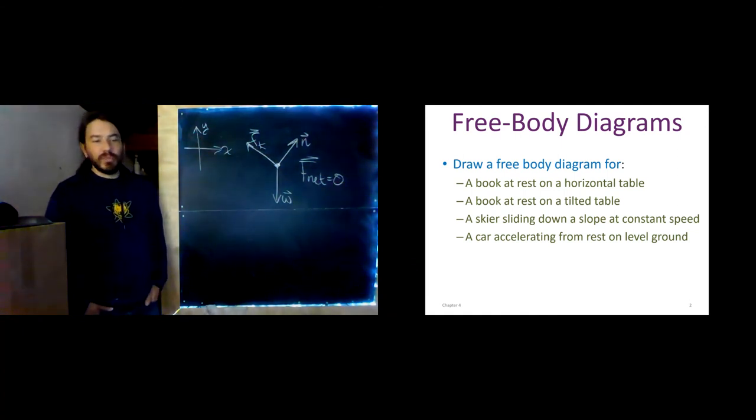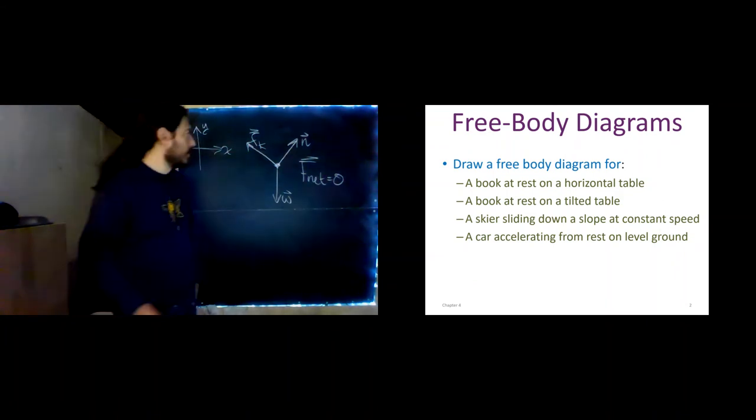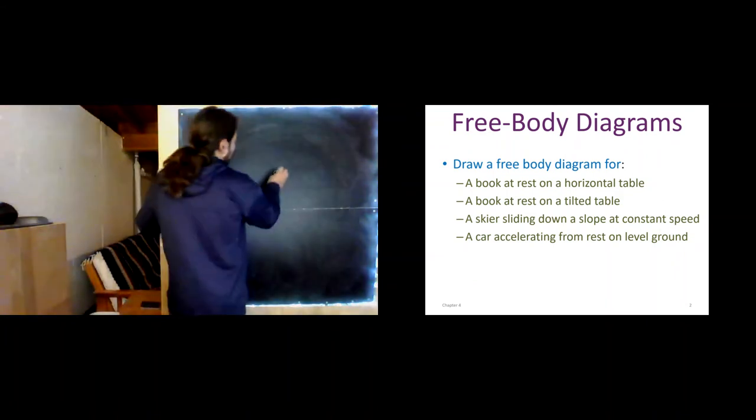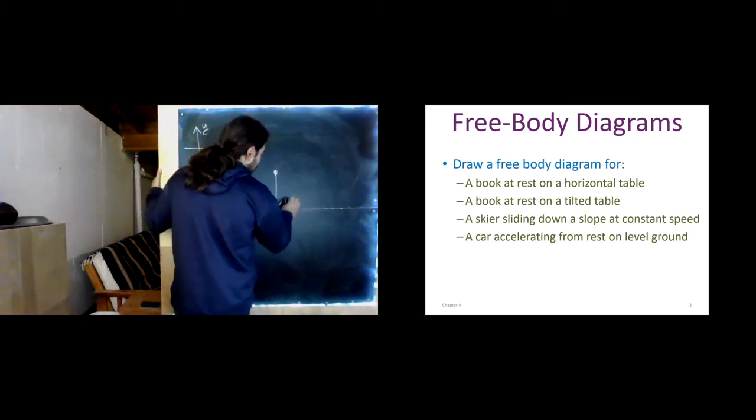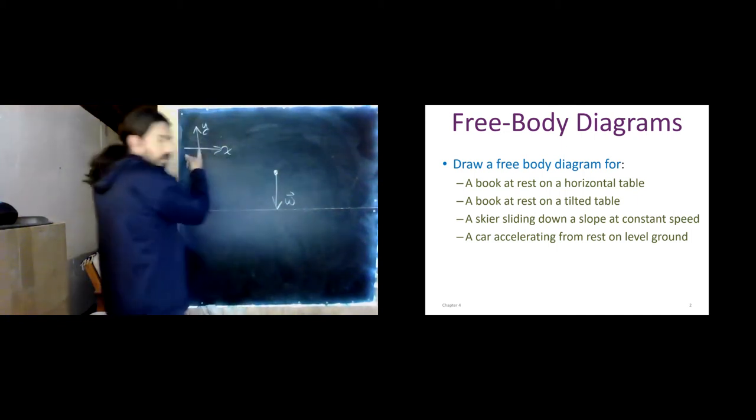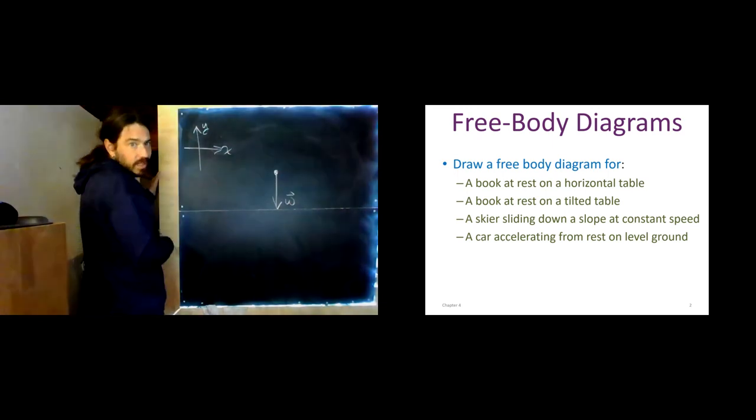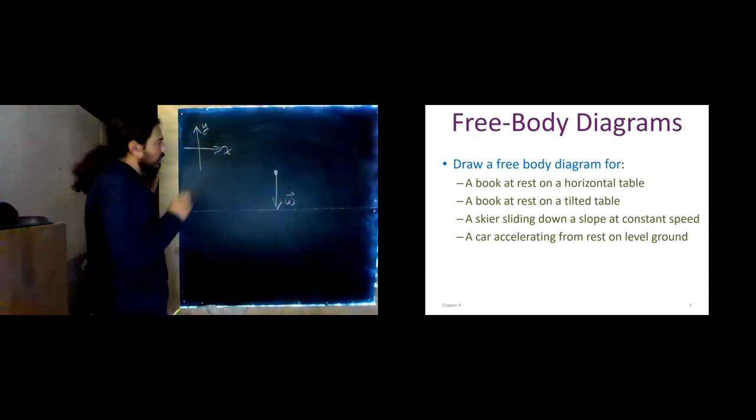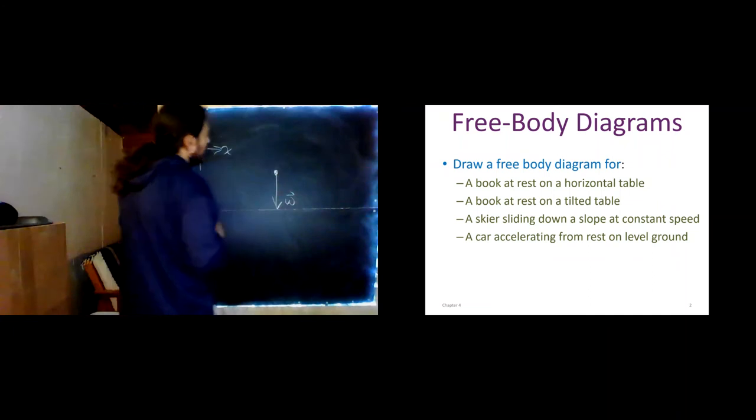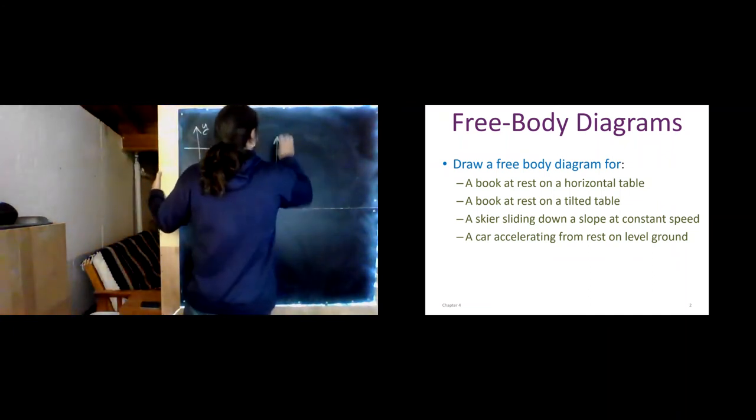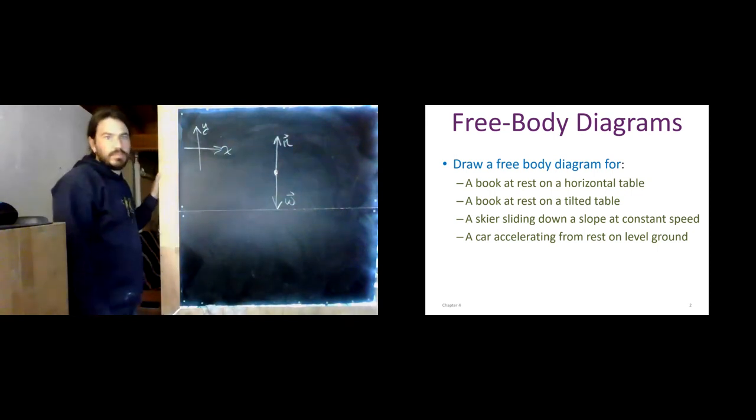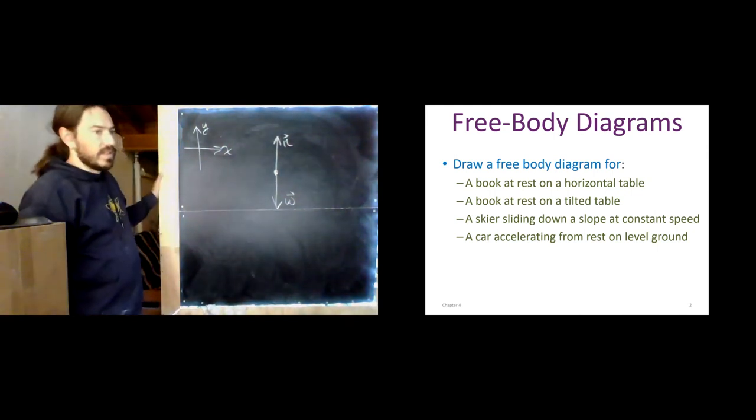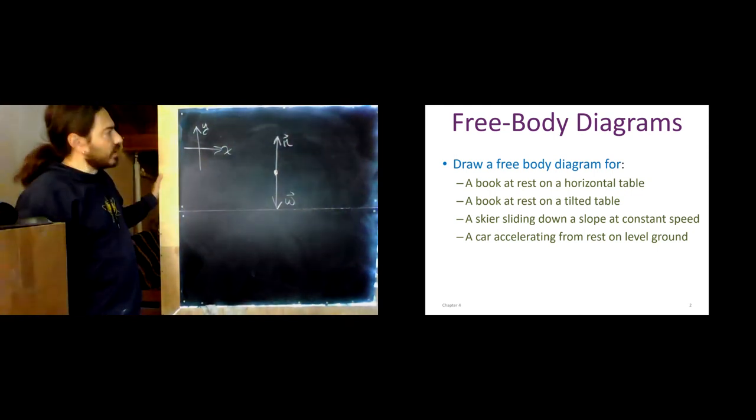How about this one? A car accelerating from rest on level ground. Well, here's my car. What do we got? We've got weight, certainly. And we'll just use our standard coordinate system again. No need to tilt it. We'll see examples where we want to, but we'll talk about that when we get there. Still normal force. So this is the car accelerating from rest on level ground.